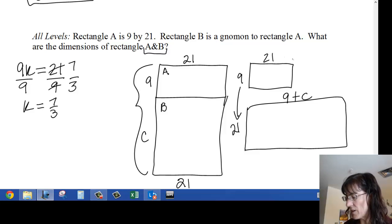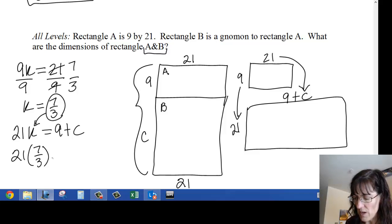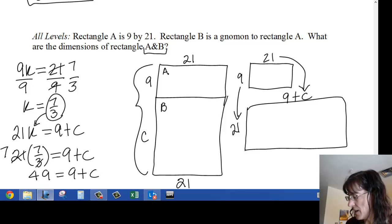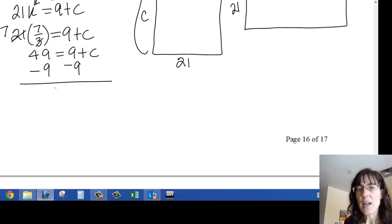And then my second pair of corresponding sides, I have 21k equals 9 plus C, so I'm going to plug in that 7 thirds there, so I have 21 times 7 over 3 equals 9 plus C. 3 goes into 21 seven times, so I have 49 equals 9 plus C. And then subtract 9 from both sides, and I get 40 equals C.